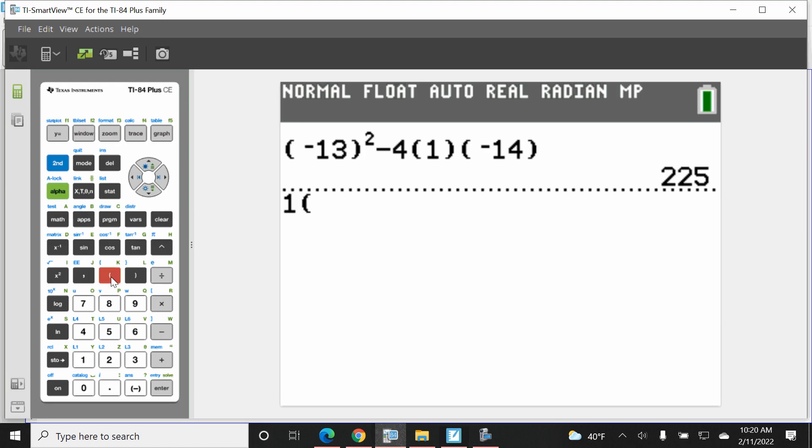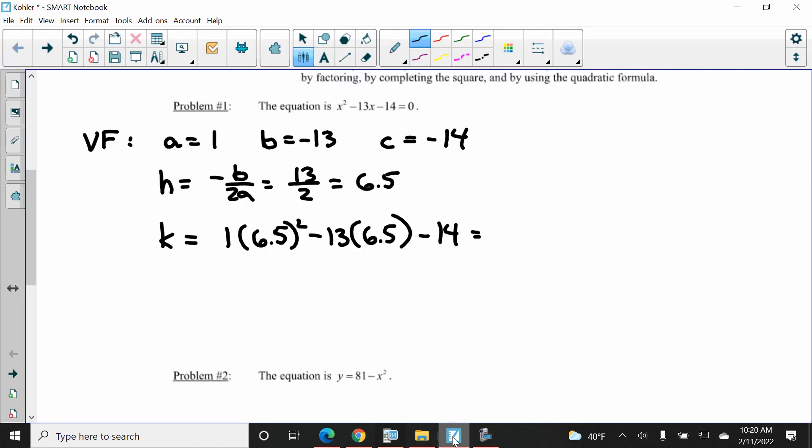So 1 times 6.5 squared minus 13 times 6.5 minus 14. And K is negative 56.25. So our vertex form is simply Y is equal to A, X minus the H number squared plus K, or in this case, minus 56.25. There's vertex form.